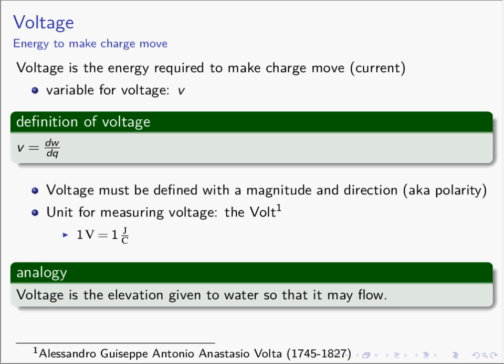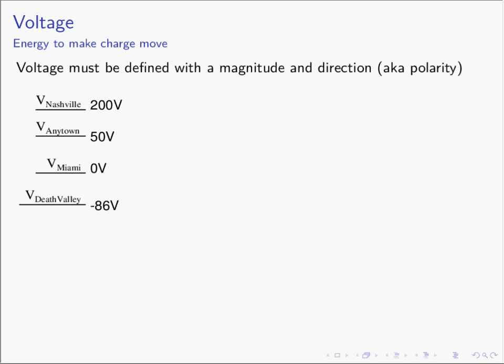It's not physical elevation — charge is looking for its lowest possible energy level. Let's imagine we have four energy levels defined and named Nashville, Anytown, Miami, and Death Valley. For whatever reason, the voltage of Miami is zero volts — it is a voltage measured with respect to some reference, and it has the same voltage as our reference. Anytown has a different energy level, 50 volts higher — 50 joules per coulomb higher than the reference. Nashville is 200 volts higher than our reference, and Death Valley is negative 86 volts — that is, 86 joules per coulomb lower than our reference.